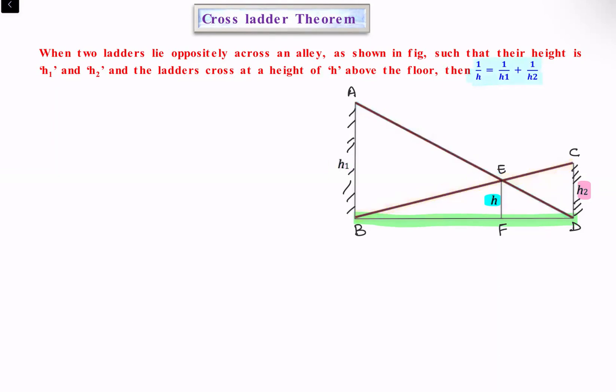Let's see the proof. Before we move ahead, we know that the buildings make an angle of 90 degrees with the alleyway. This is a 90-degree angle, this is a 90-degree angle, and the height we are calculating is also at 90 degrees.